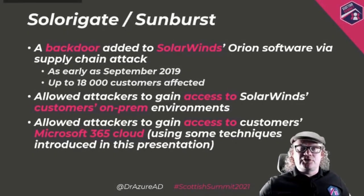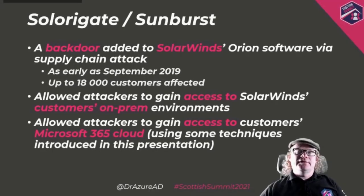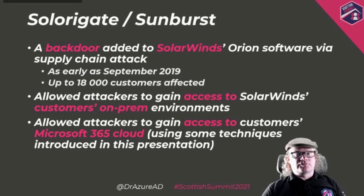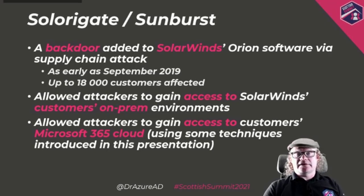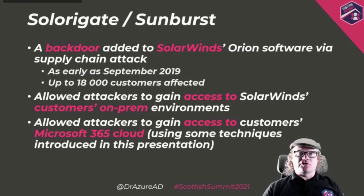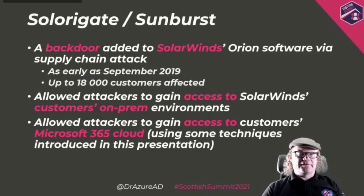A couple of words about SolarGate or Sunburst. It's a backdoor which was added to the SolarWinds Orion monitoring software. The attackers were able to penetrate the supply chain and insert a backdoor into the code, signed with certificates, spreading to at least 18,000 customers. With that backdoor, attackers were able to penetrate organizations' on-premises environments and from there laterally move to cloud-connected infrastructure — penetrating those customers' cloud environments as well, which is what I'm going to show you today.